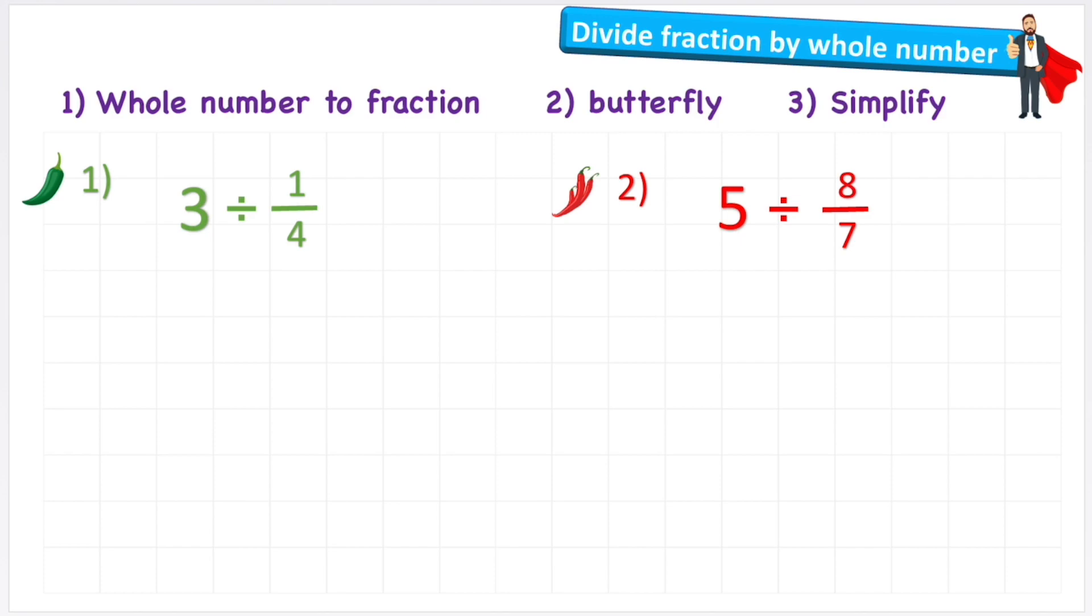Okay, so we actually have two methods we're going to look at today. You might have seen either of these before, but we're going to go through them both quite comprehensively. So let's just look at the steps that we're going to follow. First, we're going to convert the whole number to a fraction. This is an important step for both of the techniques. Then we're going to butterfly or we're going to KFC, and we'll see what that means in a minute, and then simplify when needed.